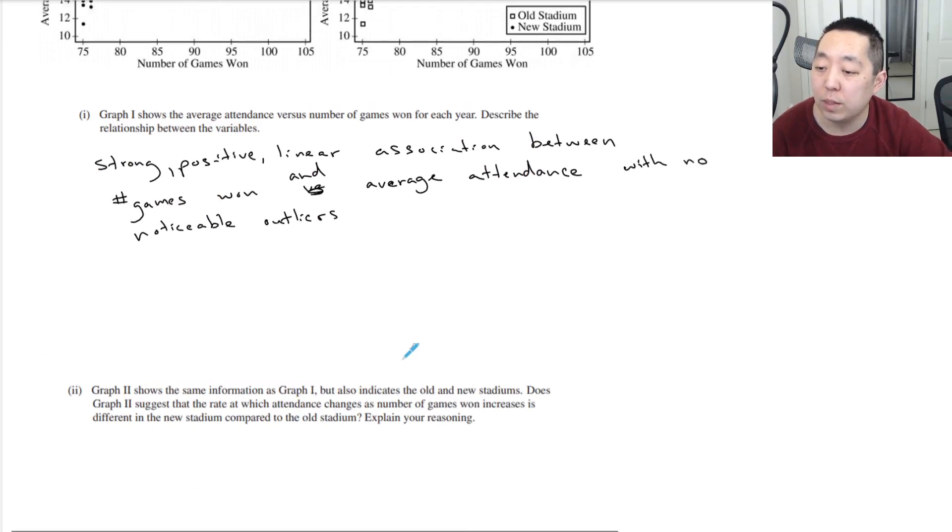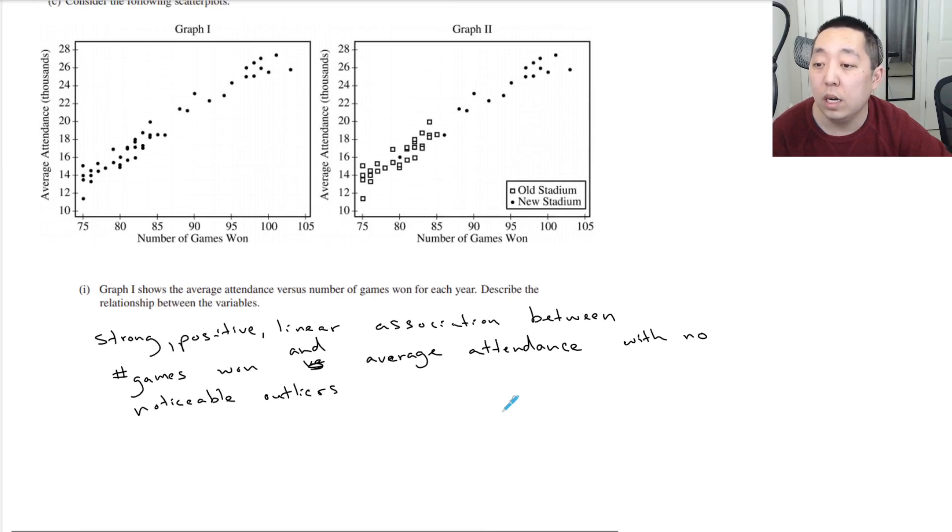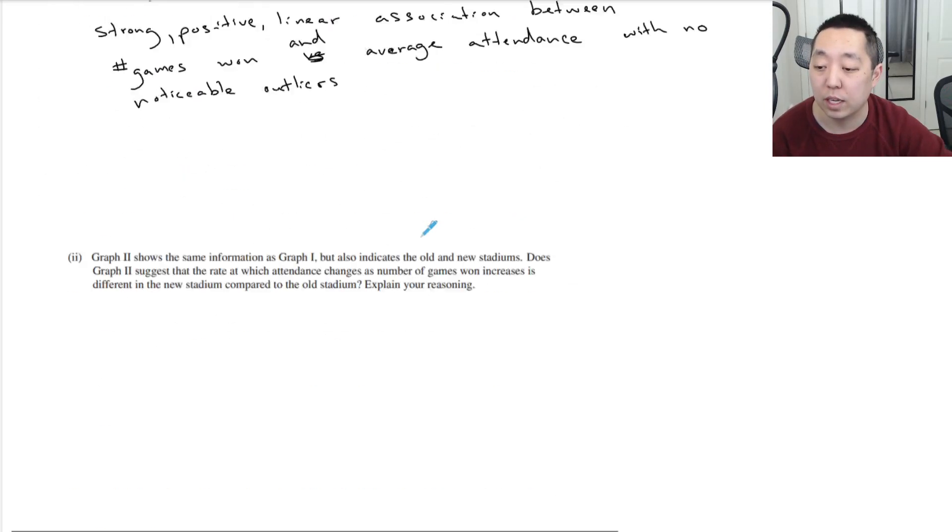Okay, graph two shows the same information as graph one but also indicates old and new stadiums. Does graph two suggest the rate at which attendance changes as the number of games won increase is different in the new stadium compared to the old stadium? Explain your reasoning. Well, while the old stadium is clustered lower, it looks like it's about the same kind of relationship. I mean, it seems pretty strong and positive. I wouldn't say it's necessarily that significant, so I would say it appears to be about the same.